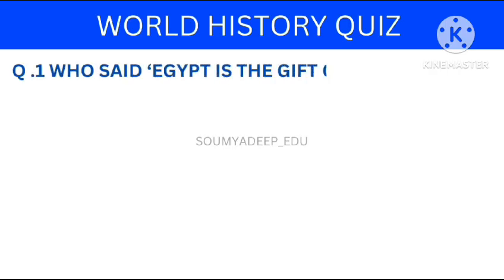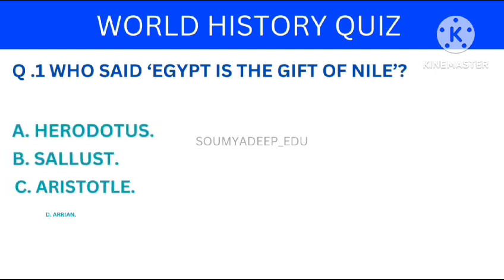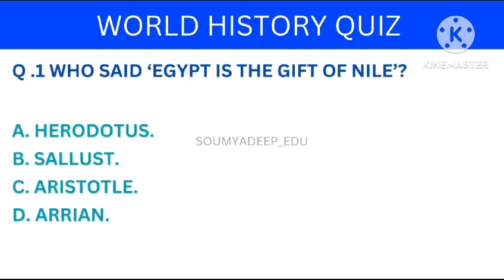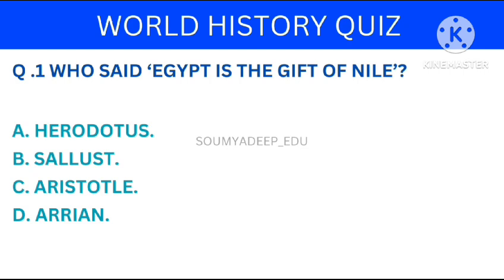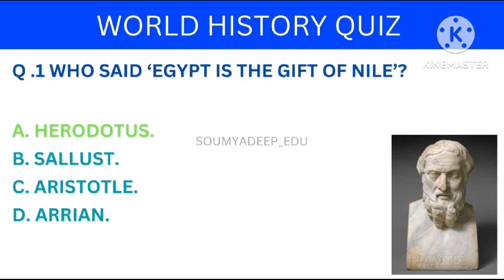Egypt is the gift of Nile. The options are: Herodotus, Celeste, Aristotle, Arian. Your time starts now. The answer is Herodotus.